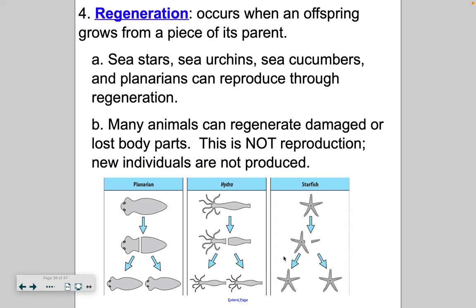A fourth type of asexual reproduction is called regeneration. This happens when a piece of the parent turns into the offspring. There are some organisms where if you cut a piece off, that piece will actually become a new organism. Sea stars — or starfish — do this. This picture is slightly inaccurate; you have to make sure you get a piece of the middle, the central or the canal ring. But if you cut a starfish in half, you've created two starfish because over time they will regenerate. Sea urchins, sea cucumbers, and planarians all do this through regeneration. Keep in mind: if that piece that's cut off does not become a new organism, that is not reproduction — new individuals are not produced in that process.